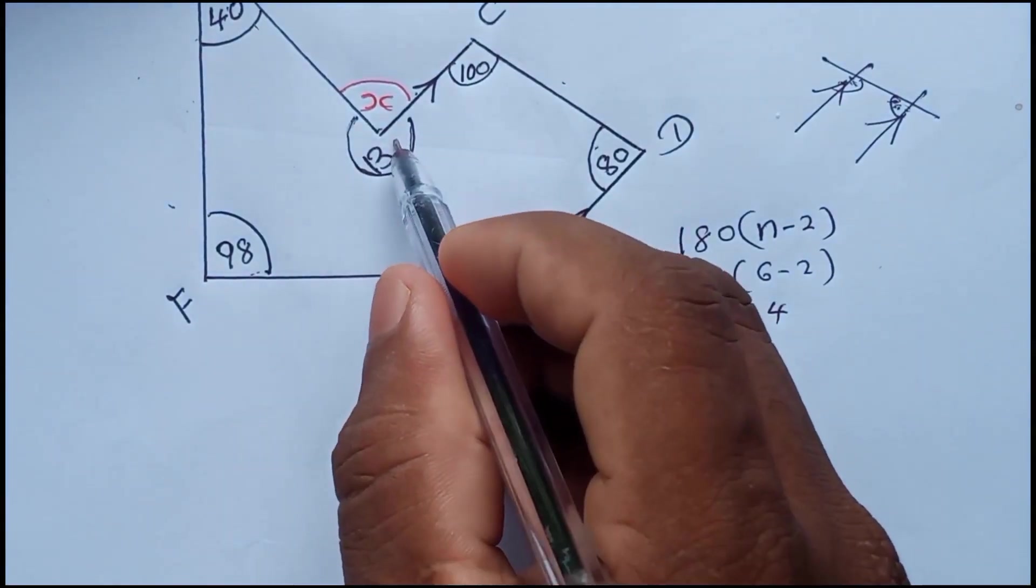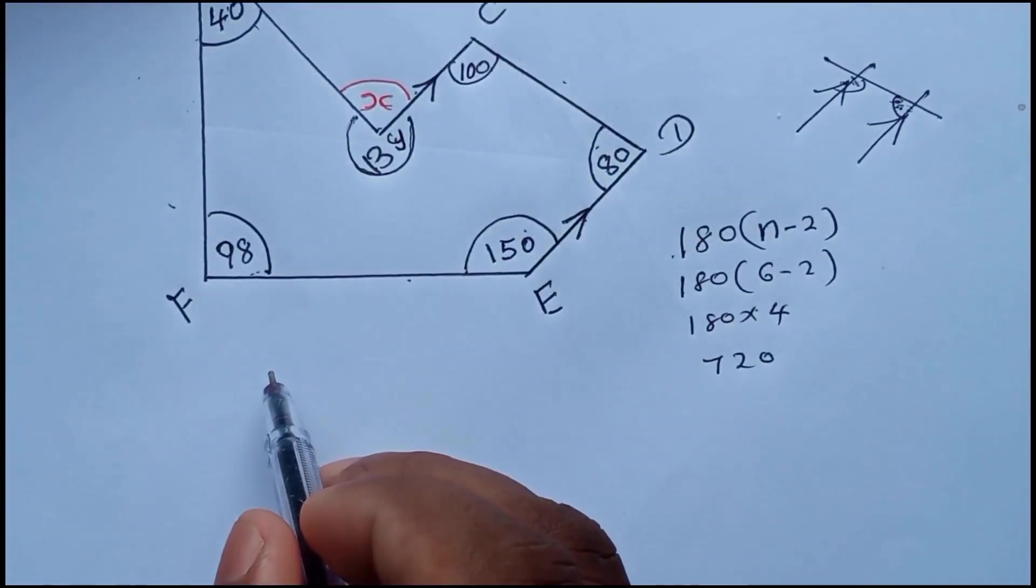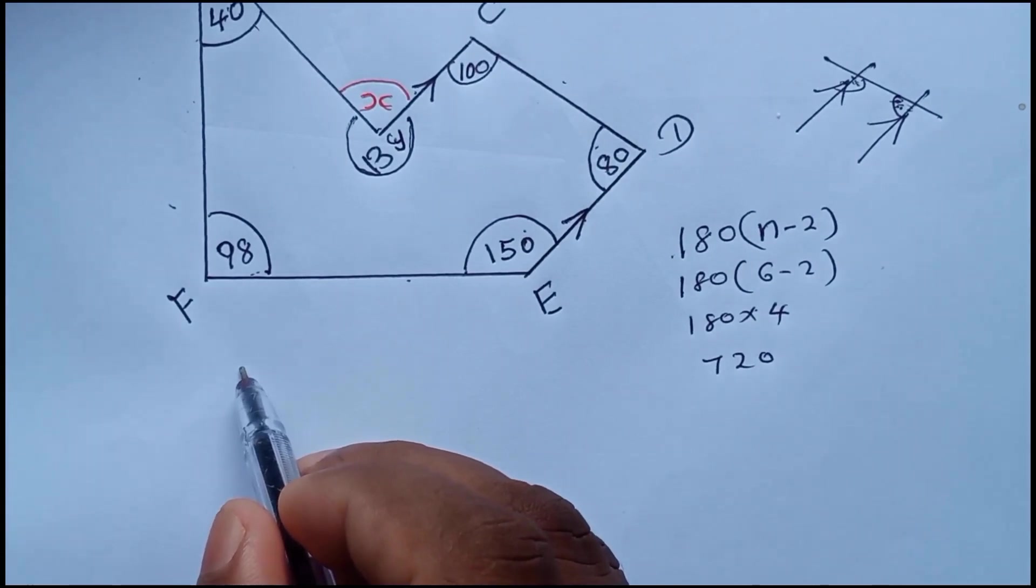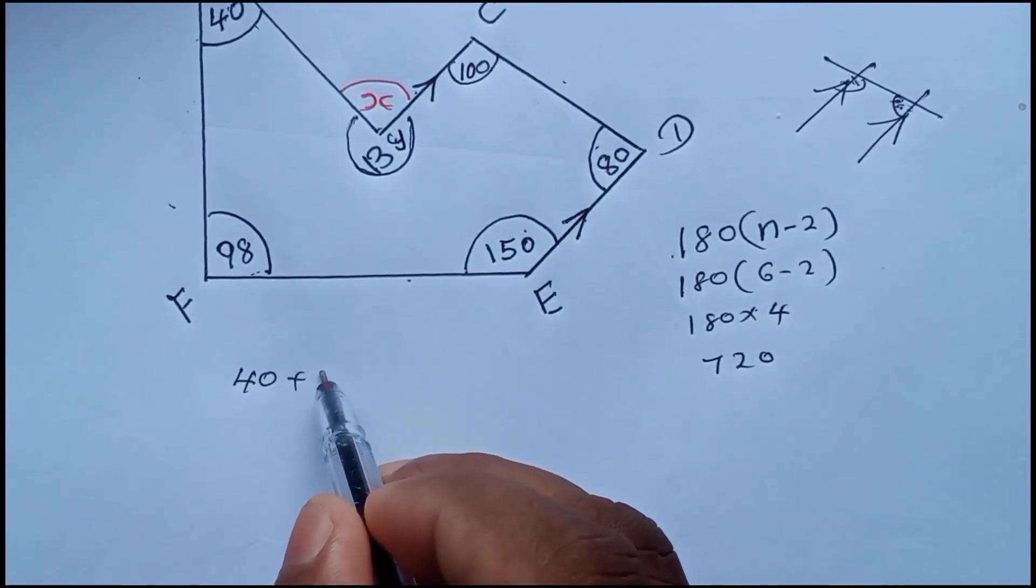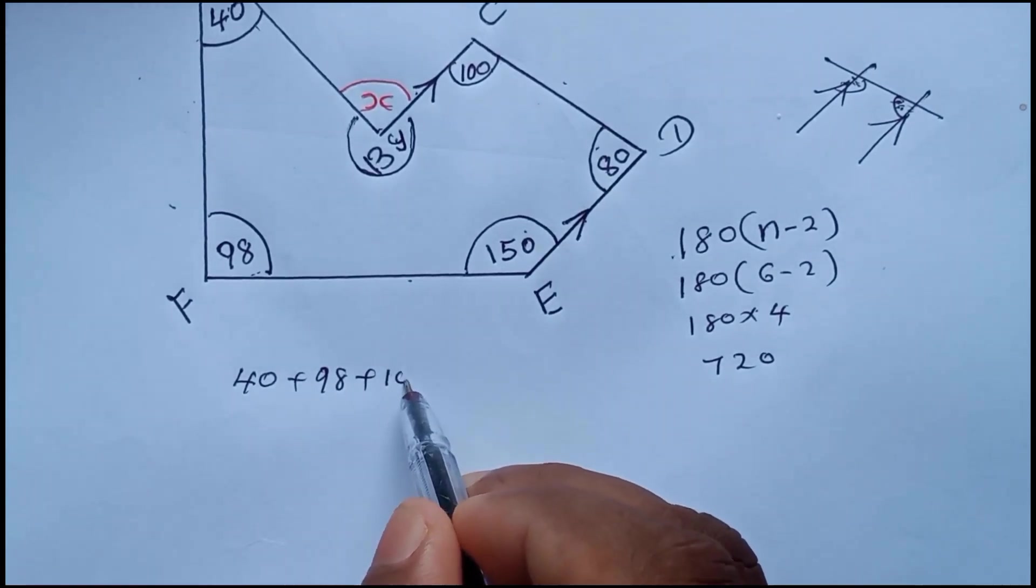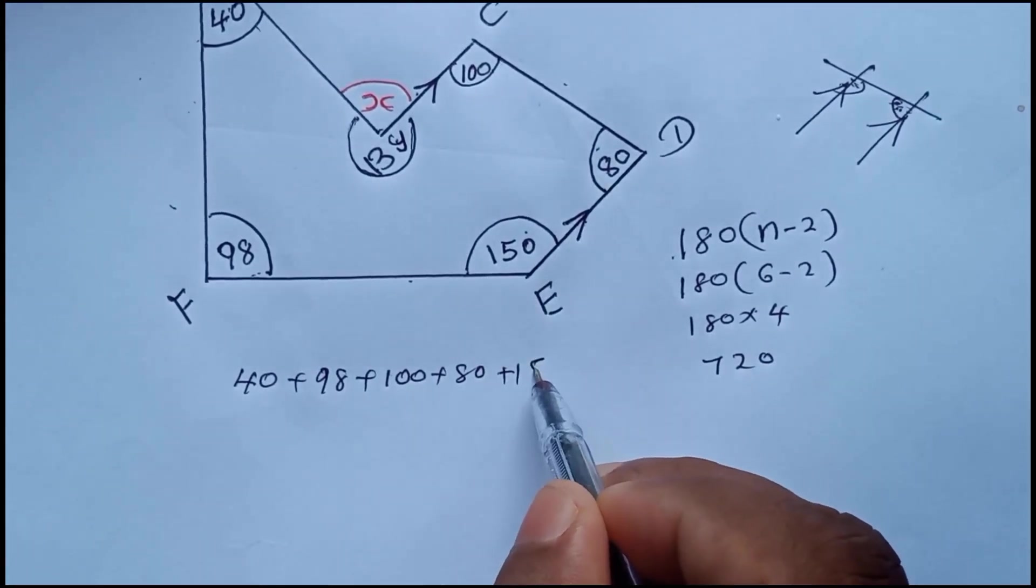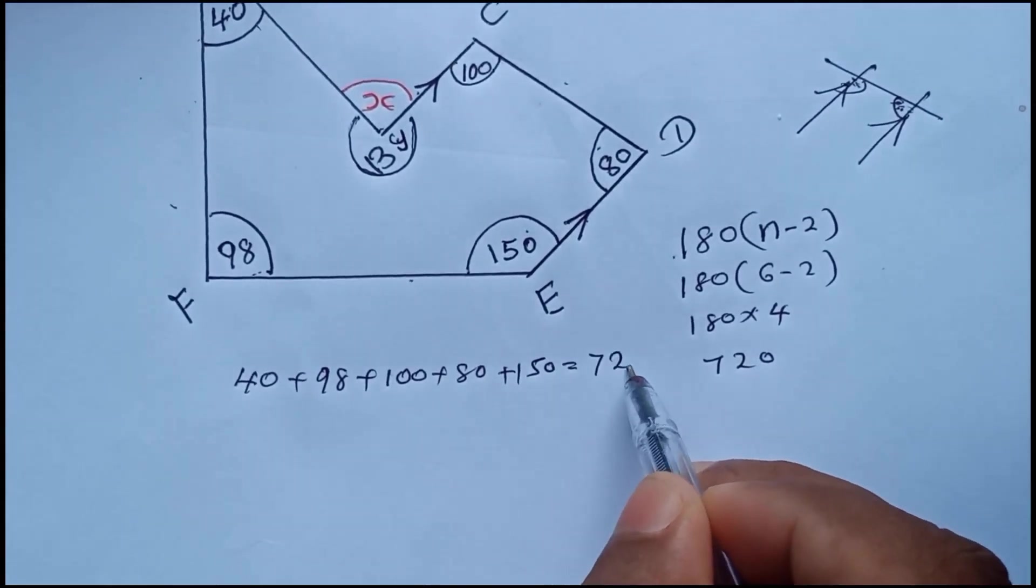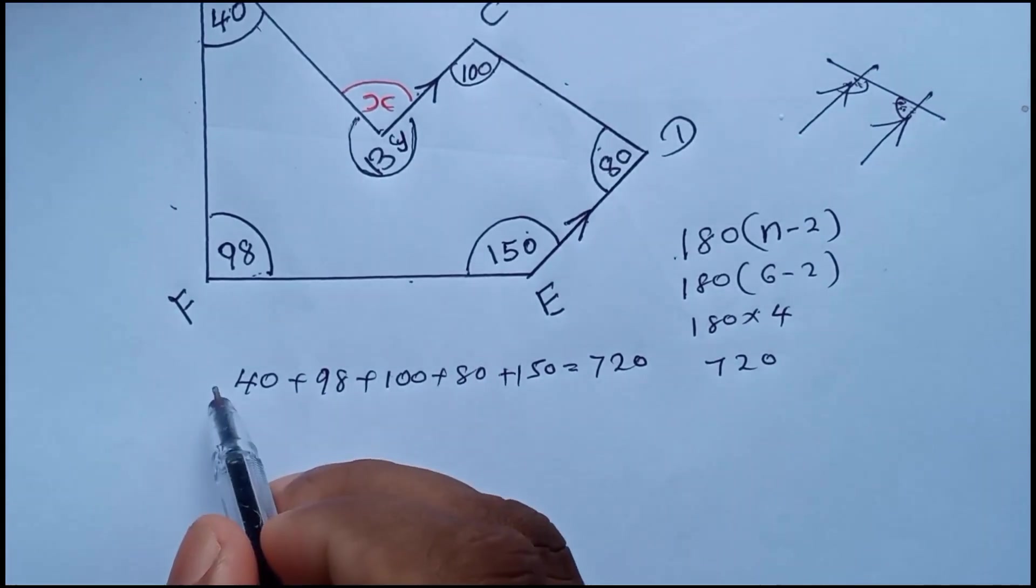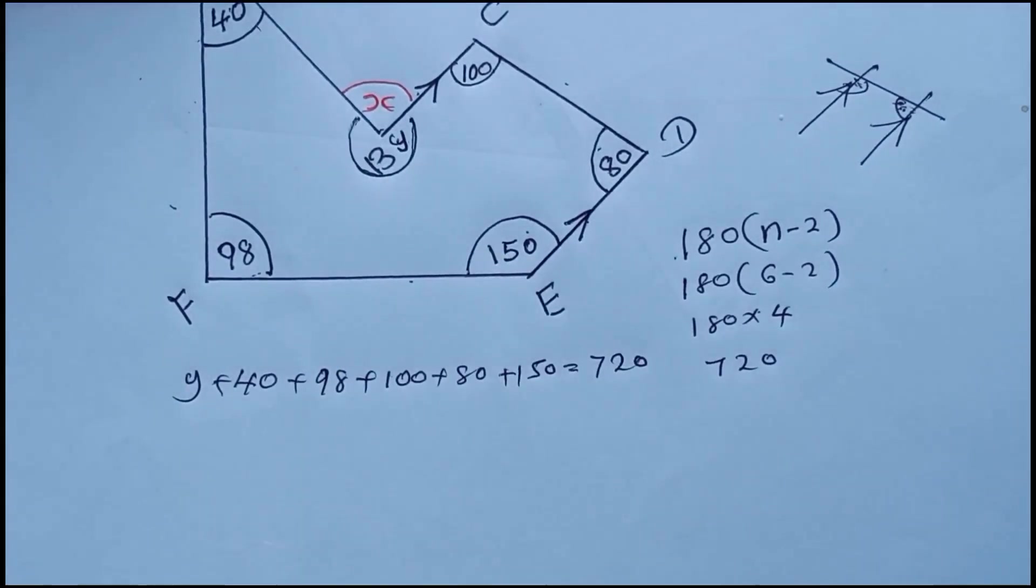Right. Now you can write this. If I call this has y, this angle has y, now you can write 40 plus 98 plus 100 plus 80 plus 150, all together should be 720, plus also here y plus this one.